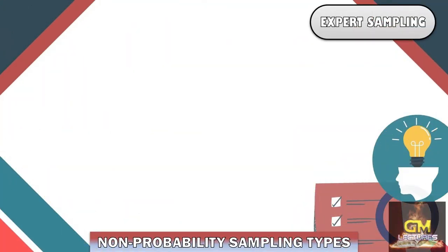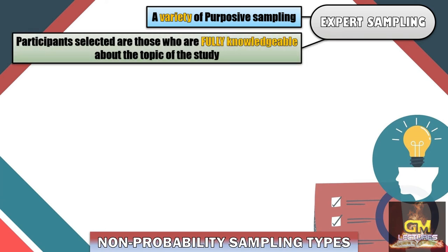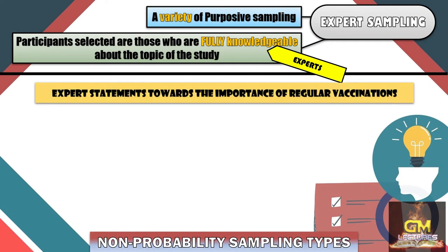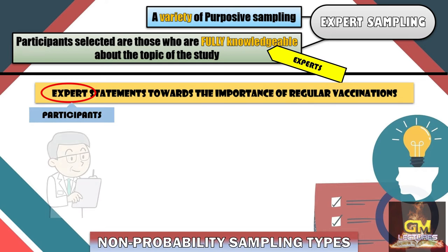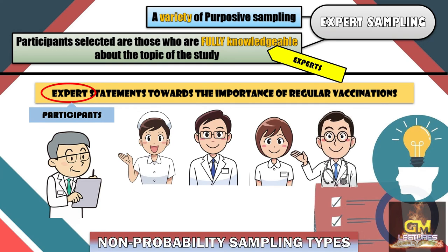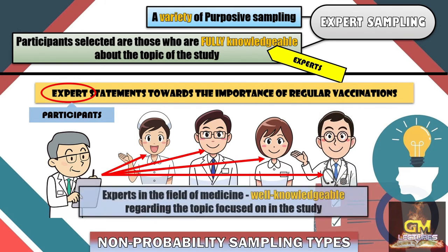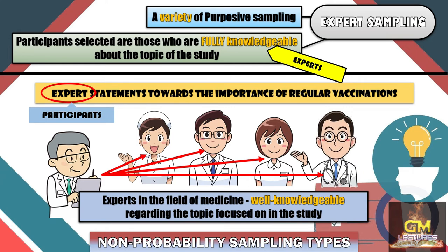Now let's talk about expert sampling. Expert sampling is a variety of purposive sampling, meaning the participants selected are those who are fully knowledgeable about the topic of the study — hence the term 'experts.' These are people who are knowledgeable in terms of the topic, those who have experience, and those who really know what they're talking about. For example, in a study that aims to get expert statements towards the importance of regular vaccinations, the participants are of course those who are experts — people who are in the medical field. The researcher would then involve participants who are knowledgeable in terms of the medical field and are well knowledgeable regarding the topic focused on in the study.